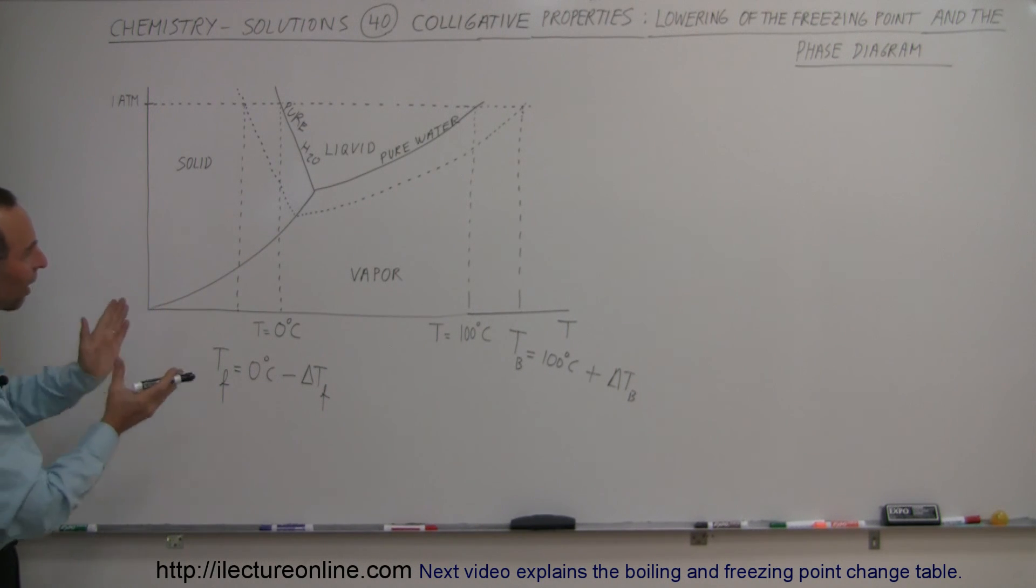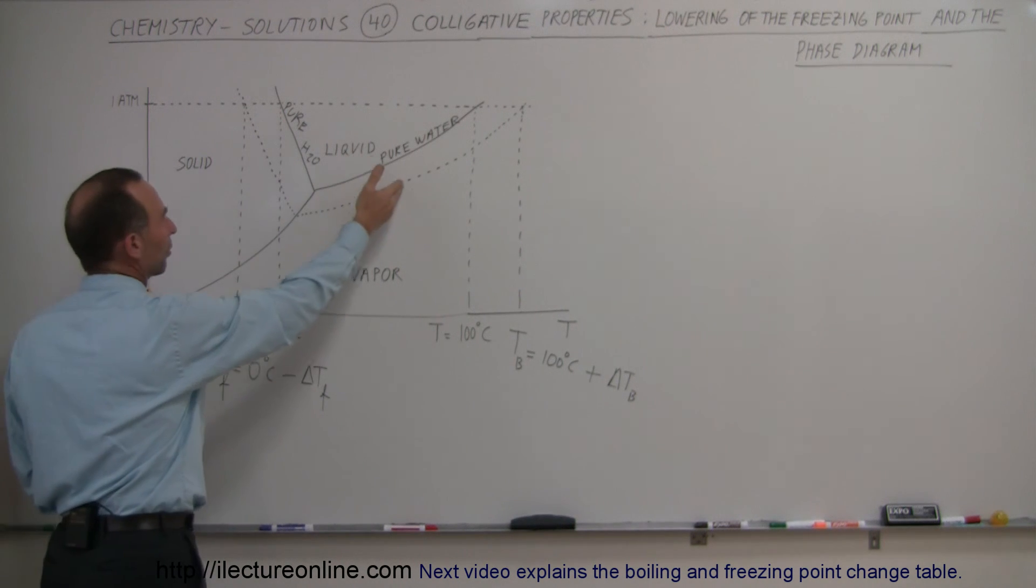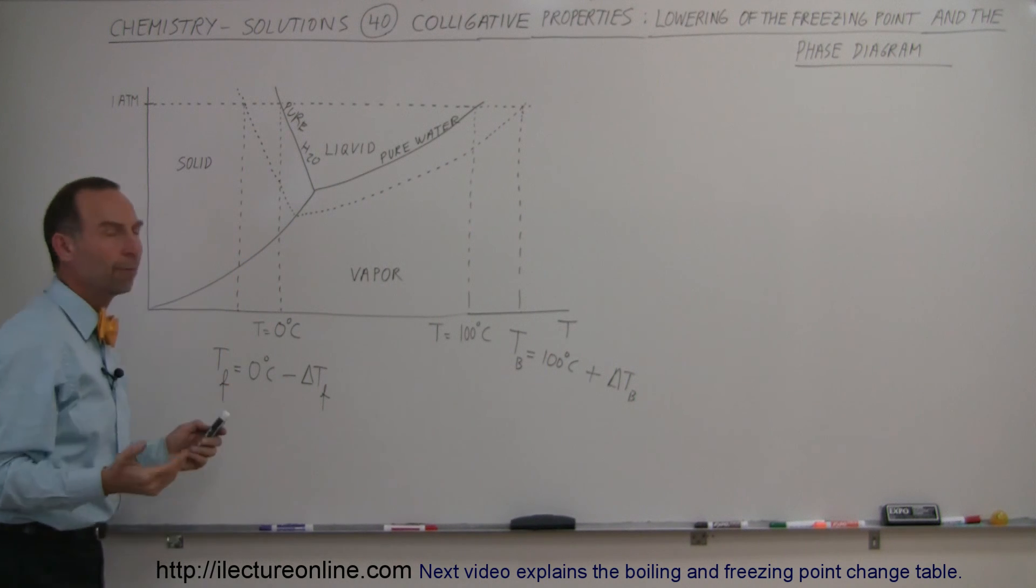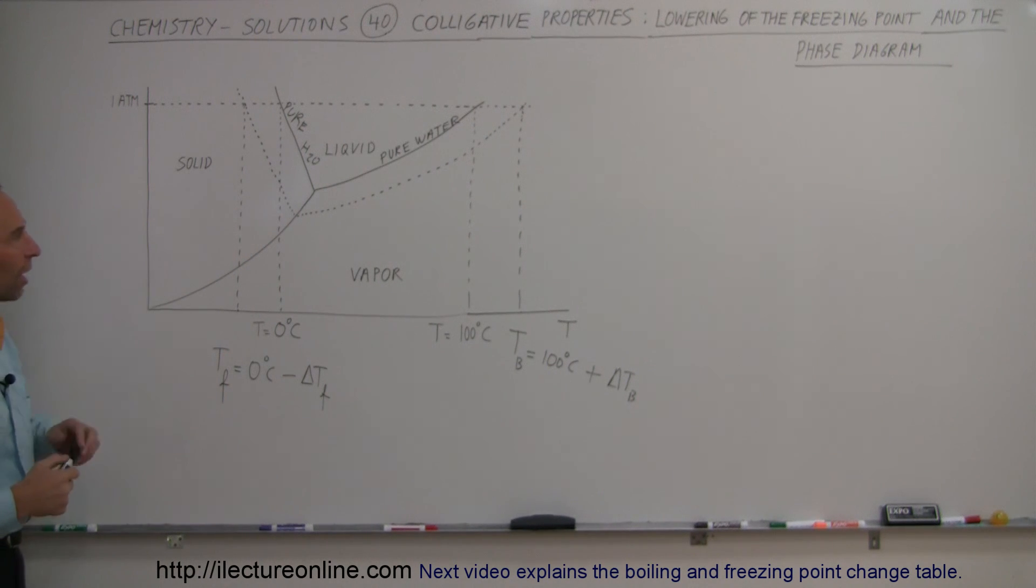And so that's how our diagram will change. Simply we have lower vapor pressure here, and water begins to melt at a lower temperature by adding a solute to it. That's how you have the change on the phase diagram.